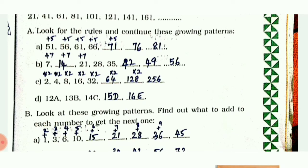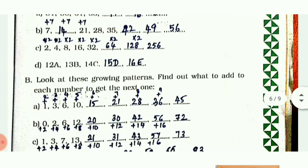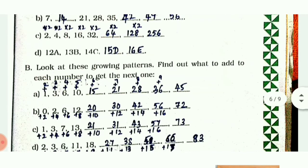So A, then the next alphabet, same way: 13, 14, 15, 16 - you can add B, C, D next to them. Look at these patterns and find out what to do to each number to get the next one. For example: 1, 3, 6, 10...